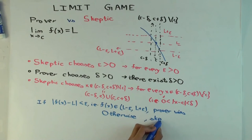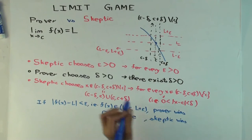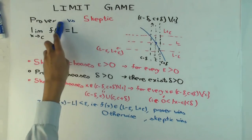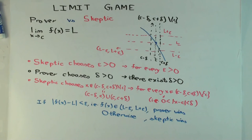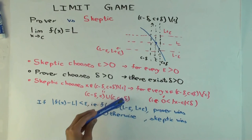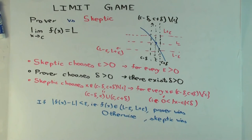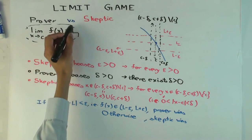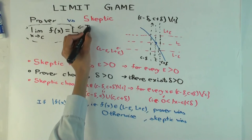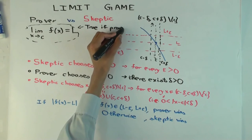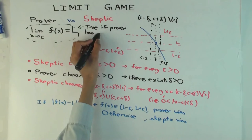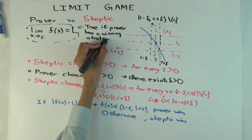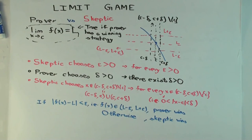Now, the skeptic can choose a really dumb x, so what does it actually mean to say the statement is true? It's not just enough that the prover wins once — for every x in the interval and for every epsilon, the prover should have a strategy that works for all of them. So the statement is true if the prover has a winning strategy: the prover should be able to win the game regardless of how smart or how the skeptic plays. That's why all the skeptic's moves are prefaced with 'for every.'